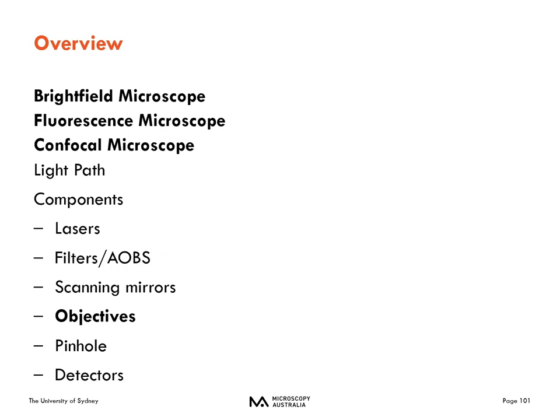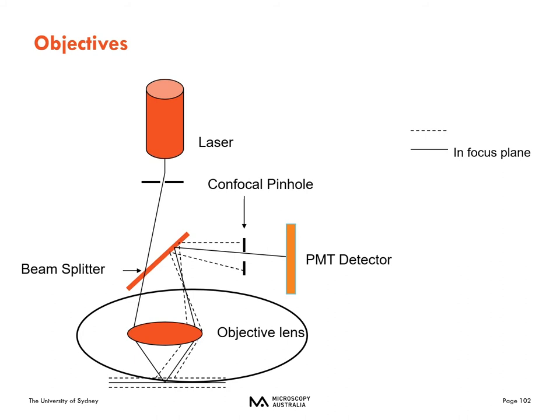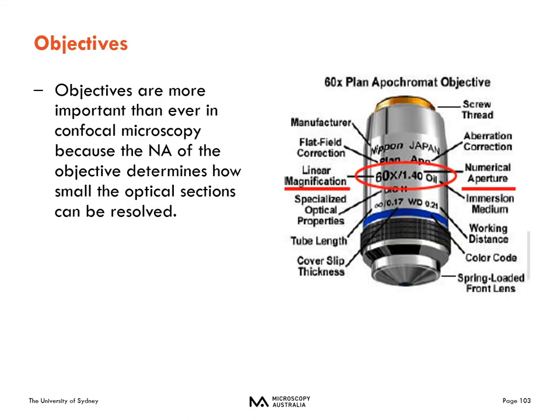We've now talked about lasers, filters, and scanning. Now I'm going to talk more about objectives. Just like in fluorescence and brightfield microscopy, the objective lens is probably the most important part of your microscope. In confocal microscopy, you really need to think hard about that numerical aperture — I just talked about sampling and resolution, and that comes back to numerical aperture. Something we think about in confocal microscopy is optical sectioning, the z-depth of each slice. The numerical aperture determines how thick that optical section is going to be.